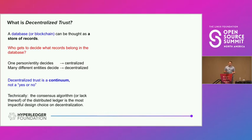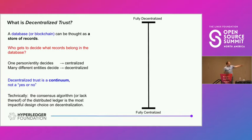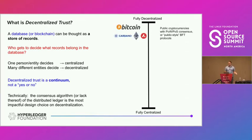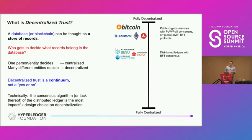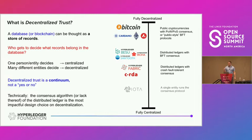The consensus algorithm is the most impactful design choice on decentralization, but there are many other choices to make. On a continuum from fully decentralized to fully centralized: the most decentralized systems are public cryptocurrencies like Bitcoin, Ethereum, Cardano, and Ava with proof of work or proof of stake. Slightly less decentralized are distributed ledgers with BFT consensus. Further along are those with crash fault tolerant consensus, and finally traditional databases, which are fully centralized.